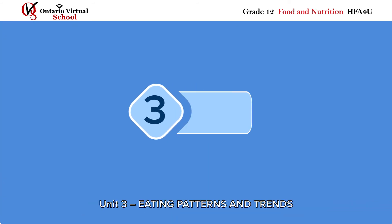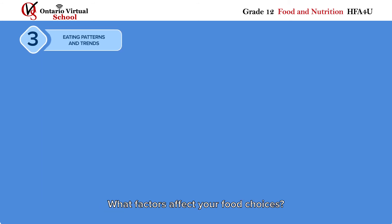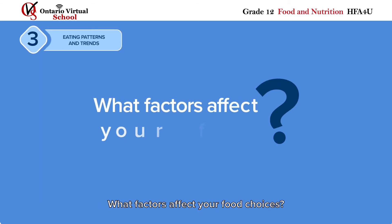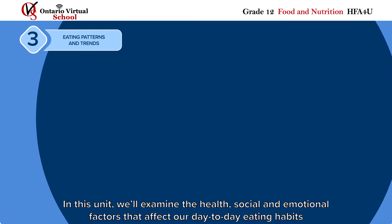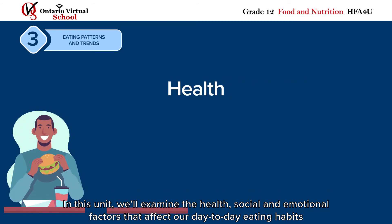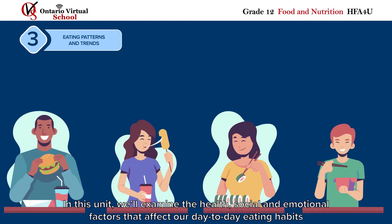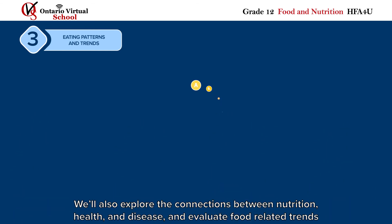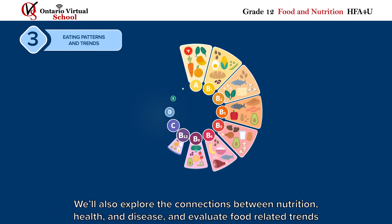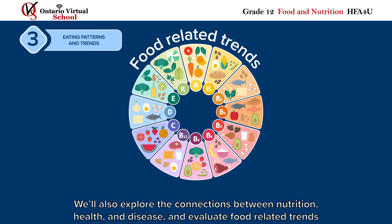Unit 3 – Eating Patterns and Trends. What factors affect your food choices? In this unit, we will examine the health, social, and emotional factors that affect our day-to-day eating habits. We will also explore the connections between nutrition, health, and disease, and evaluate food-related trends.